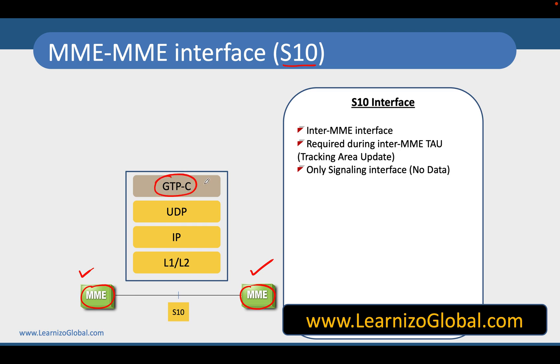They typically communicate using GTP-C, the GPRS Tunneling Protocol for the control plane. Now you may ask: how does one MME know that another MME was hosting that particular user?